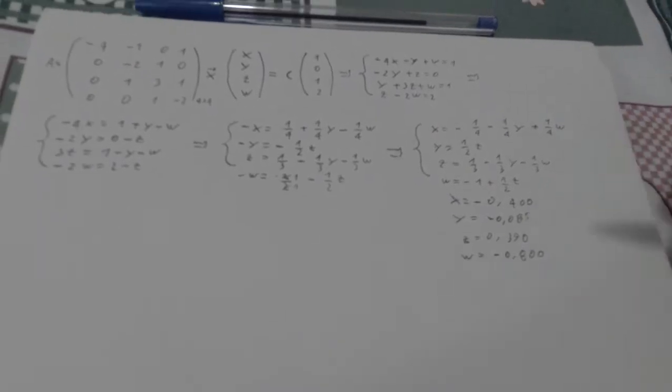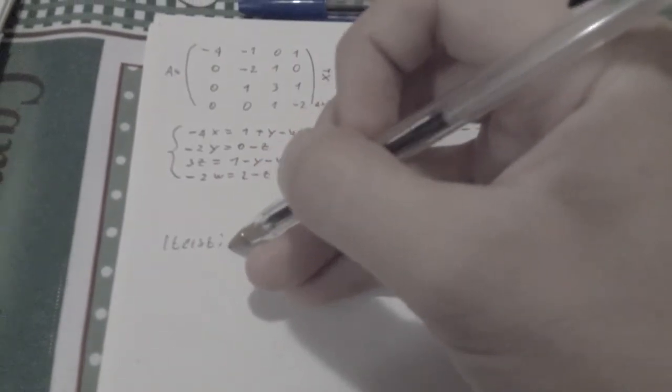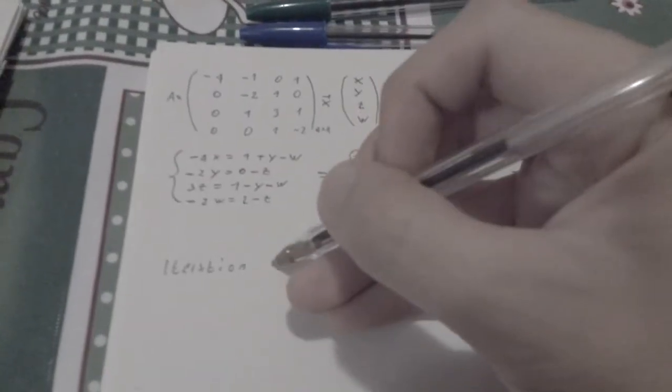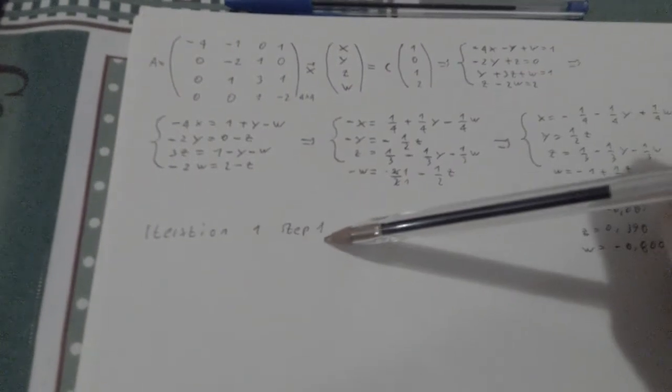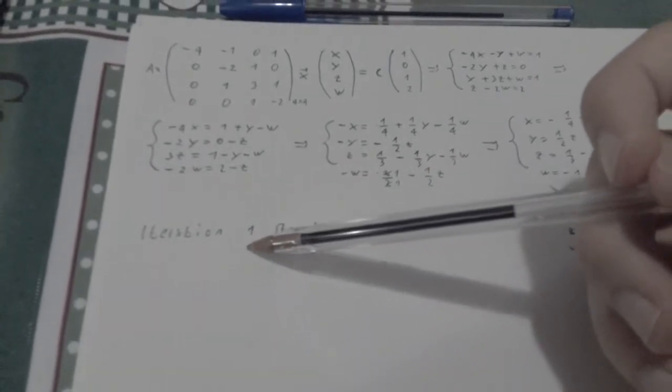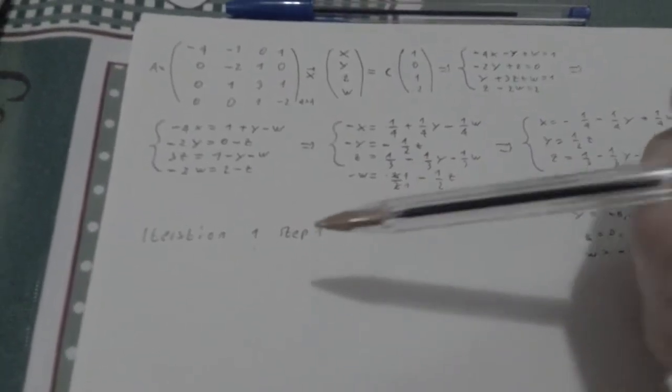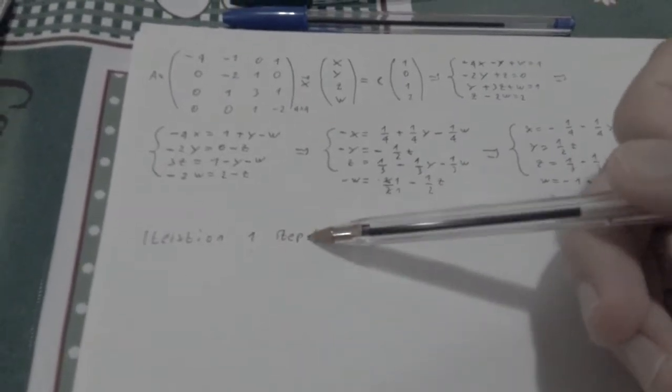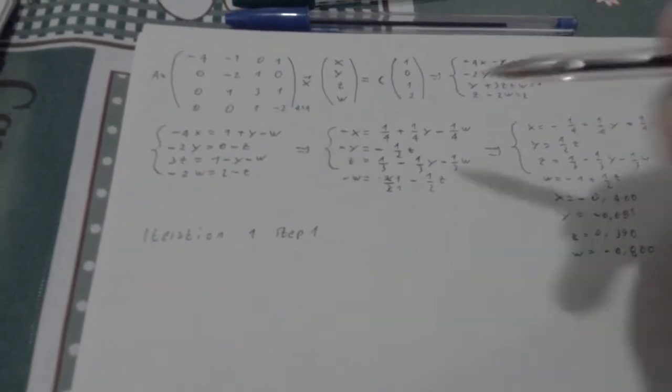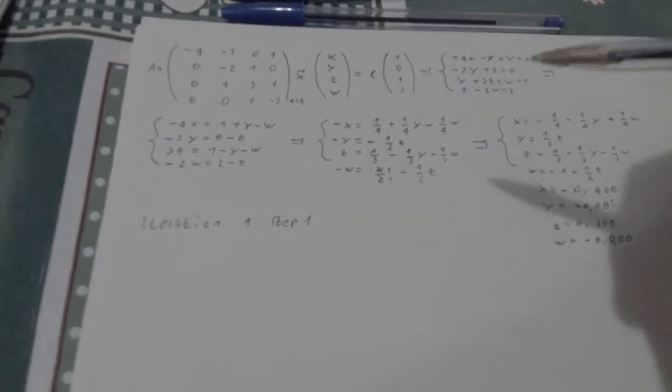So those are going to be my starting points. Let's start the Gauss-Seidel method and begin the iterations. I'm going to write: iteration one, step one. I basically consider a full iteration compared to four steps — one for each variable. There are other textbooks and universities that basically consider each step as a separate iteration, so the notation is pretty different between universities and countries, but the method is the same.